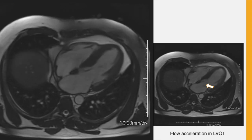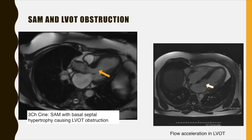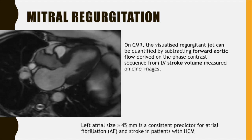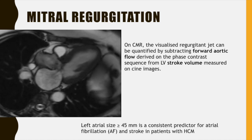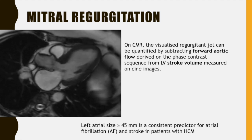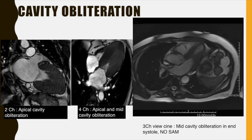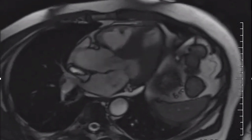LVOT obstruction leads to secondary functional mitral regurgitation. On CMR, the visualized regurgitant jet can be quantified by subtracting the forward aortic flow derived from phase contrast sequence from the LV stroke volume measured on the cine images. Left atrial dilatation is also common due to the restrictive physiology and mitral regurgitation. Left atrial size more than 45 mm is a consistent predictor for atrial fibrillation and stroke in patients with HCM. Cavity obliteration is a specific sign of HCM and is not seen in other conditions such as hypertension or athlete's heart — the three-chamber cavity obliteration here is due to mid-wall hypertrophy in HCM.